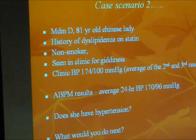BP is still high, so increase amlodipine to 10mg and check blood pressure again. BP comes to 146/84 — this is probably okay with the new guidelines, as less than 150/90 is the target. She will be maintained on amlodipine 10mg and telmisartan 80mg.